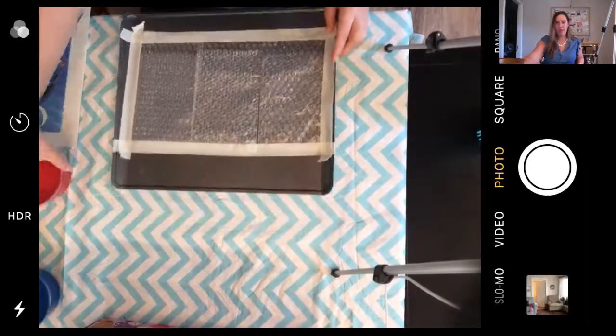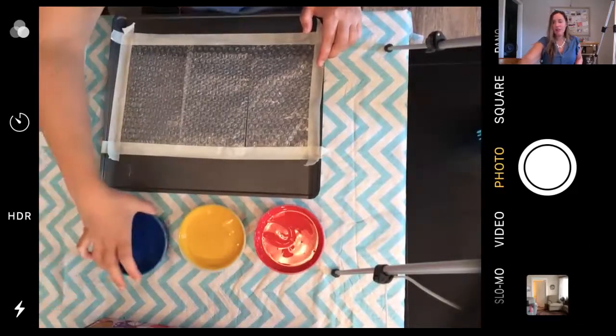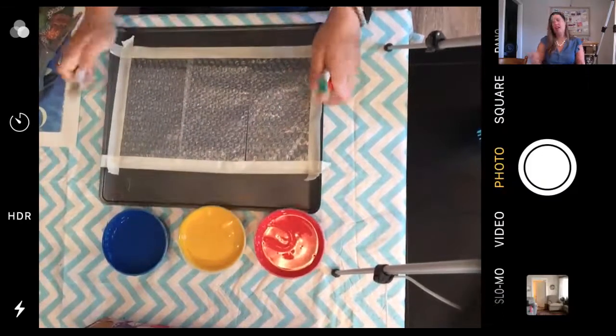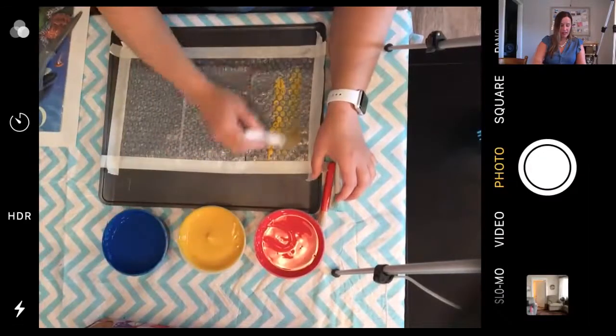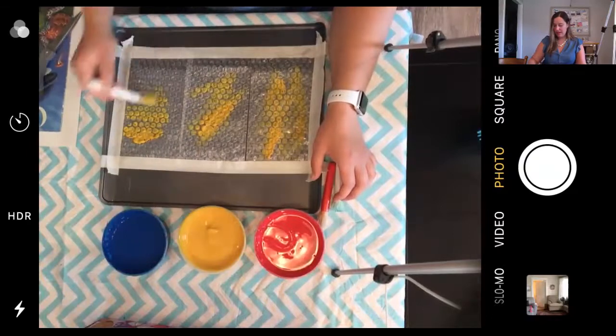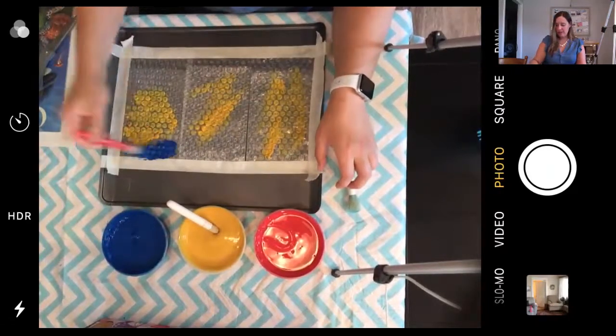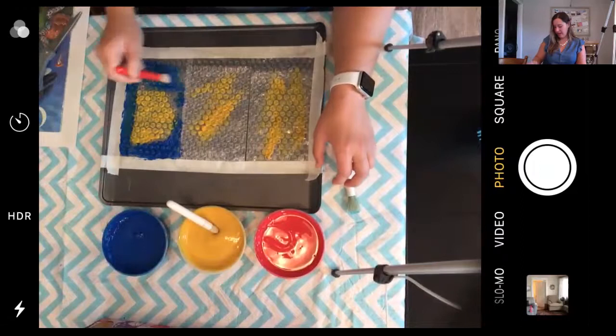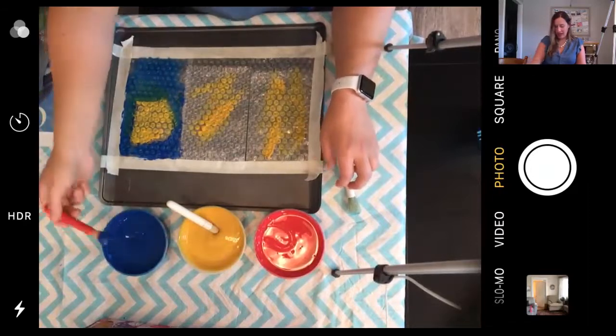Then I'm going to bring my paint over - red, yellow, and blue. I'm going to start with yellow and paint right on the bubble wrap. Then I'll get some blue. This part's fun, just painting on the bubble wrap. I'm watching the bubbles turn colors. I'm making green with blue and yellow. Look at that.